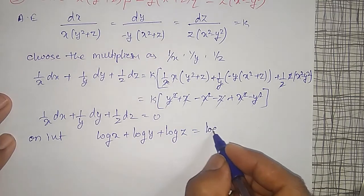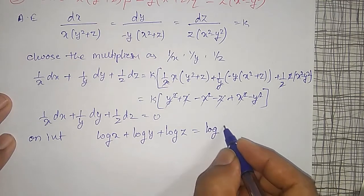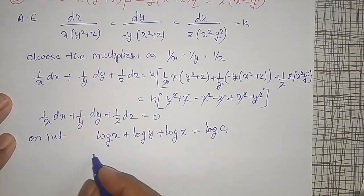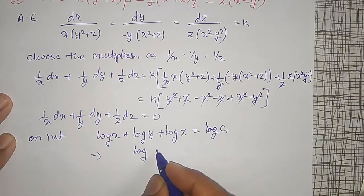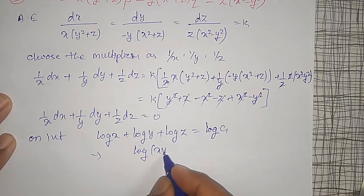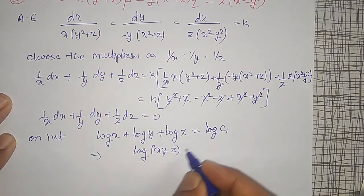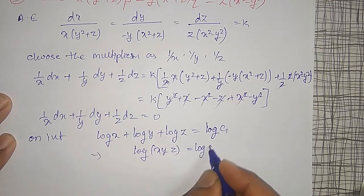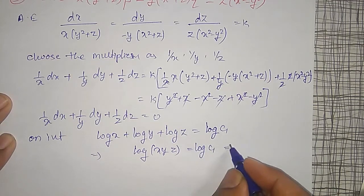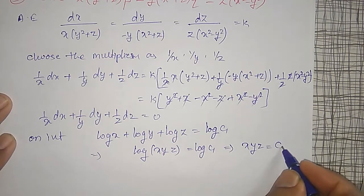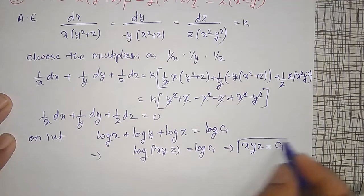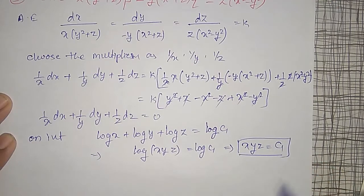On integration, log X + log Y + log Z = log C1. Using properties of logarithms, log(XYZ) = log C1, therefore XYZ = C1. This is the first solution.